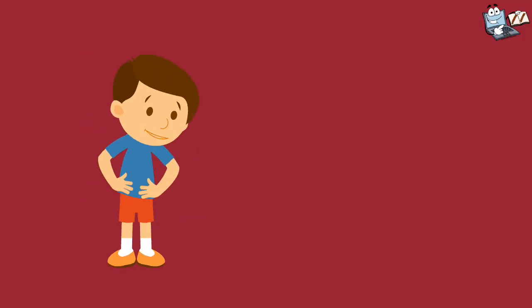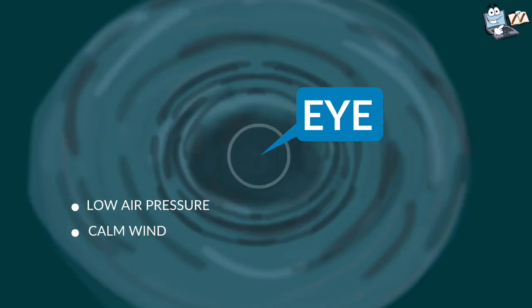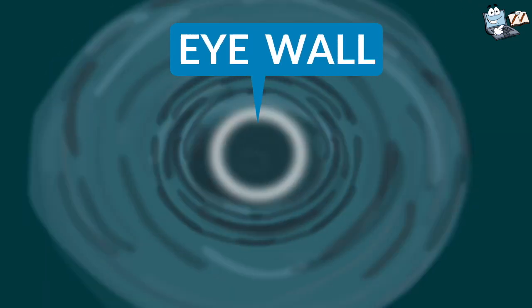Now let's study the parts of a hurricane. The eye - the center of the hurricane is called the eye. It is a part with low air pressure. Generally, the wind is calm here and there are no clouds.